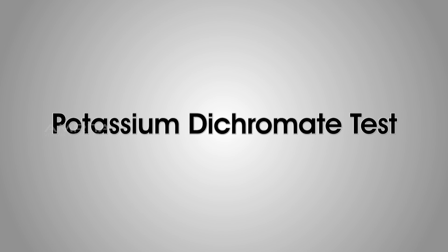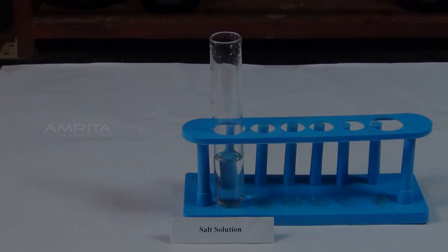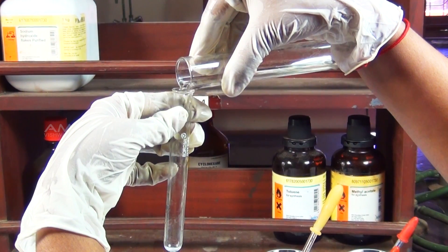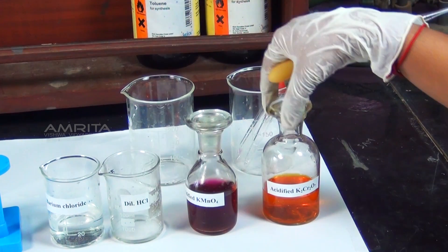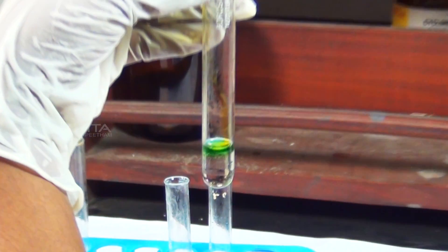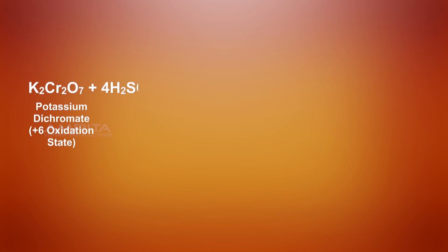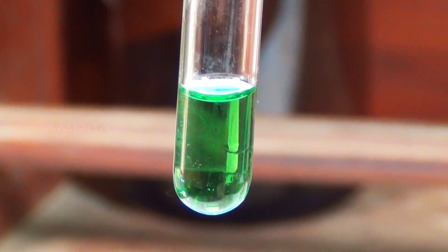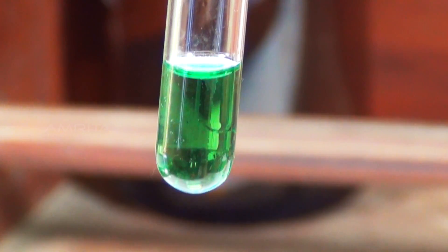Potassium Dichromate Test. Materials Required: Aqueous solution of the salt, acidified potassium dichromate solution, test tube, and a dropper. Procedure: Take a portion of the aqueous solution in the test tube. Using the dropper, add a small amount of acidified potassium dichromate solution into the aqueous solution. In the presence of acid, sulphite reduces chromium in potassium dichromate from +6 to +3 oxidation state, and sulphite undergoes oxidation to form sulphate. Chromium in the +3 oxidation state gives green colour to the solution.